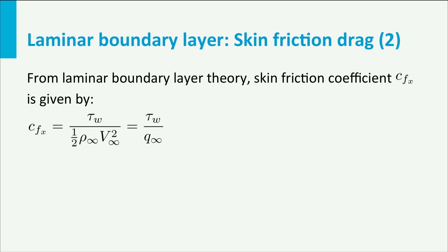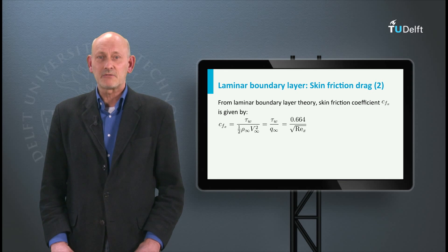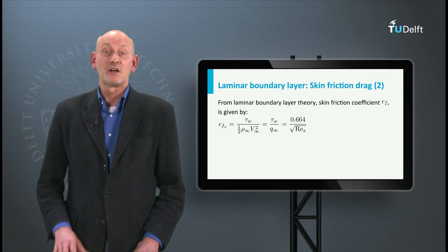From laminar boundary layer theory we can find that the local skin friction coefficient, defined as the shear stress over the undisturbed dynamic pressure, is equal to 0.664 divided by the square root of the local Reynolds number. So the skin friction coefficient decreases with increasing distance from the leading edge.